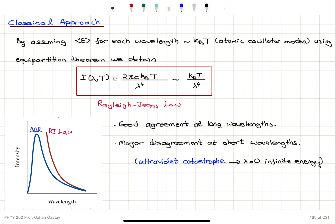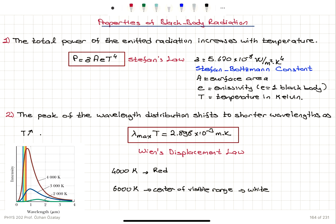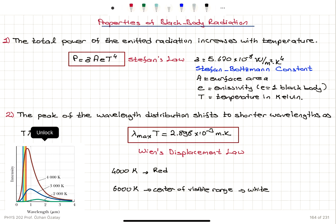Last time we talked about some properties of black-body radiation. The first one was that the power is proportional to T to the fourth power — Stefan's law, where the unit is Kelvin to the fourth power — and Wien's displacement law: lambda max times T is a constant, such that as the temperature increases, the maximum in the intensity goes to shorter wavelengths. So we want to explain these two phenomena.